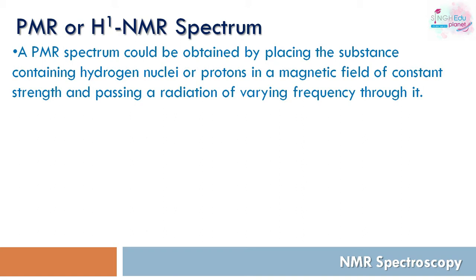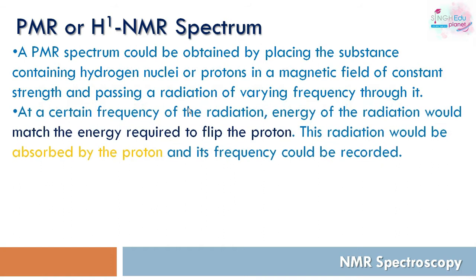The PMR spectrum is obtained by placing a substance containing hydrogen nuclei in a magnetic field of constant strength, with varying frequency radiation passing through it. At a certain frequency, the energy matches what is required to flip the proton, and we record that frequency.